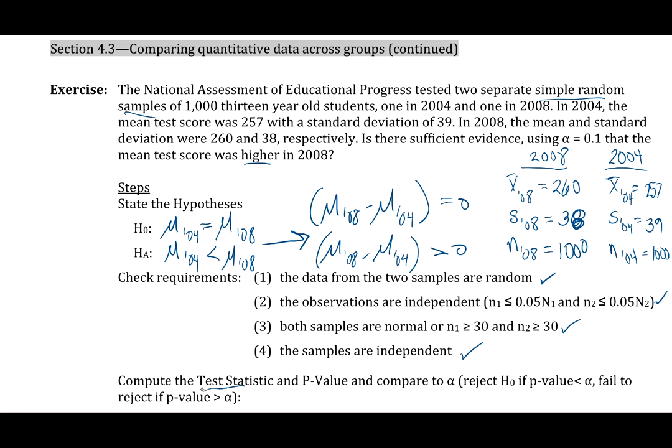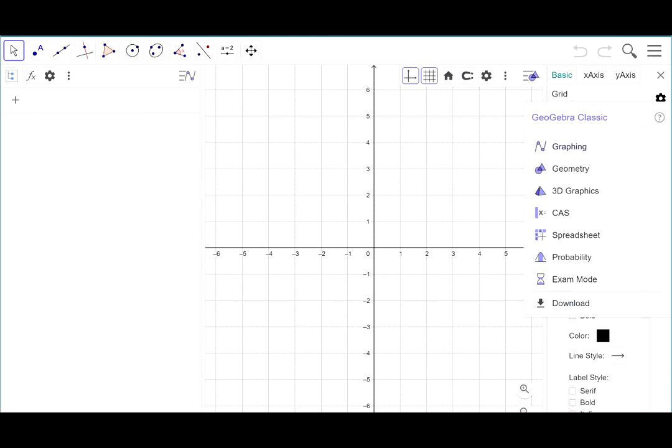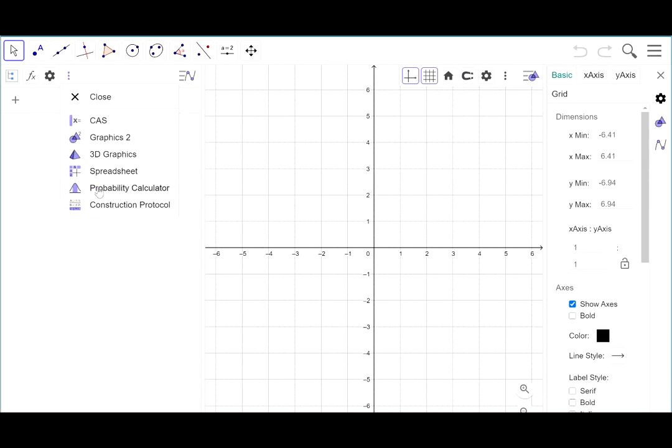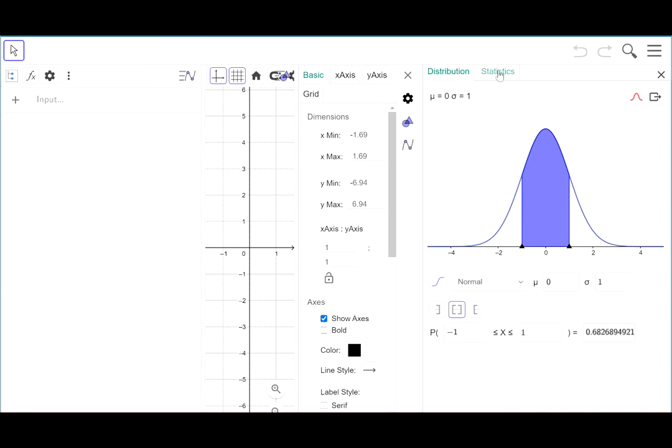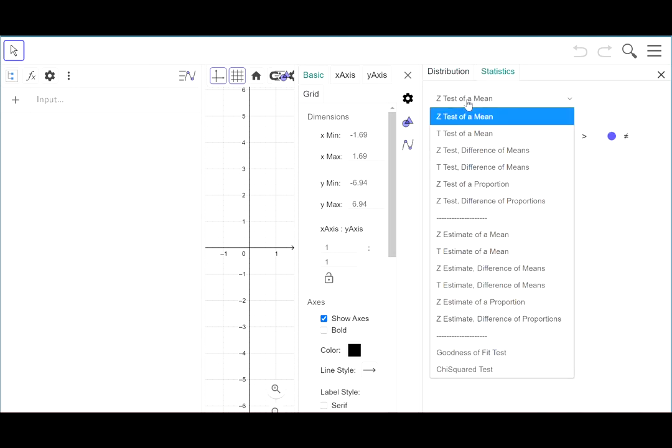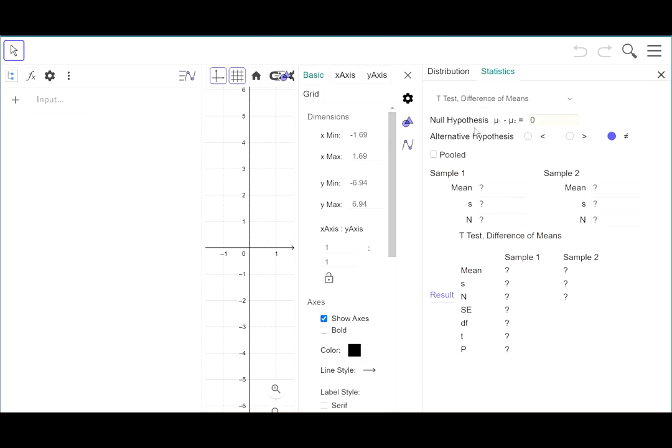Now we're going to proceed to find the test statistic and the p-value in order to carry out this test. So we go to GeoGebra, and we're going to open up the probability calculator. Go to statistics. We're trying to carry out a t-test for the difference of means. There's our null hypothesis. And then our alternate hypothesis is a greater than statement.